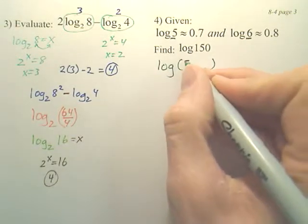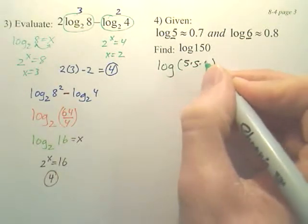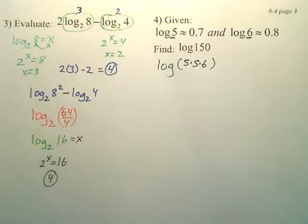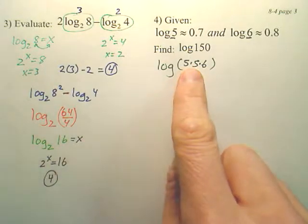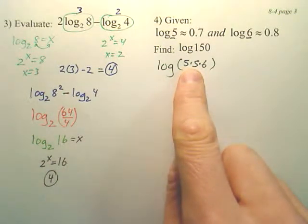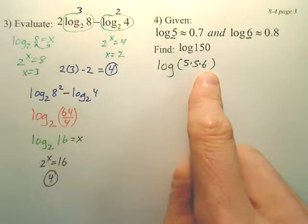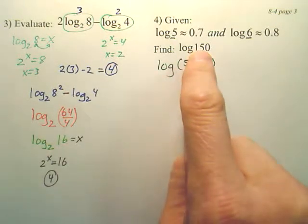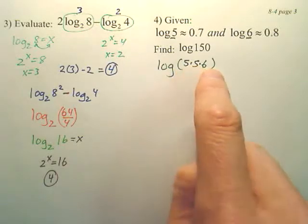And what you hopefully would notice is that 5 times 5 is 25. How many quarters make up 150? Six. So 150 is equal to 5 times 5 times 6.